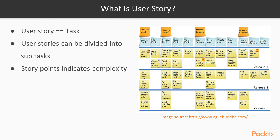Normally, every user story is given a story point, which means how complex is the story implementation-wise. An example of a user story could be: implement subtraction in calculator. That's all from this video.